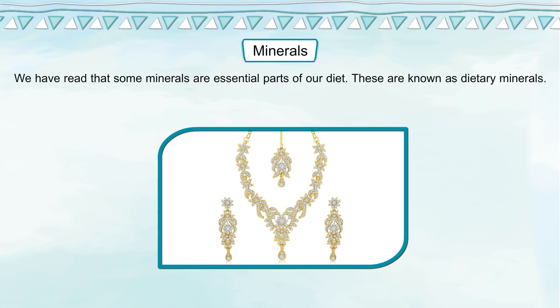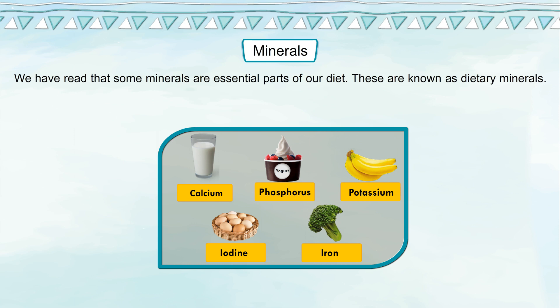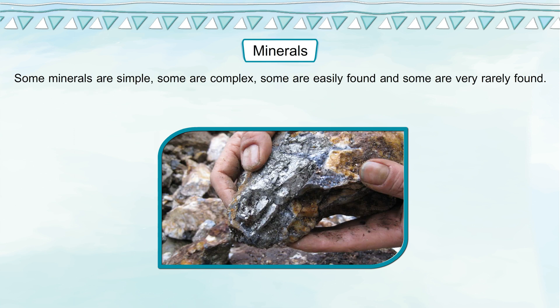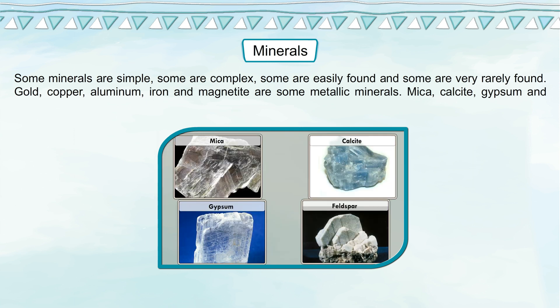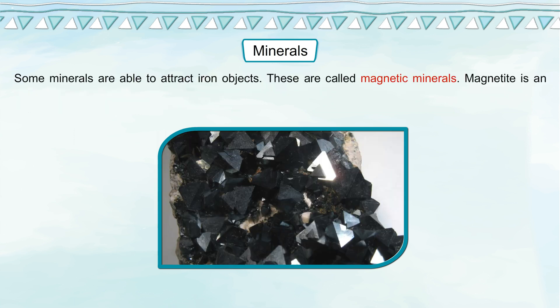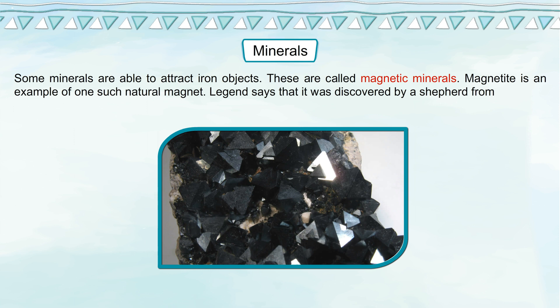Some minerals are essential parts of our diet and are known as dietary minerals. Calcium, phosphorus, potassium, iodine, and iron are some examples. Some minerals are simple, some are complex, and some are easily found while others are very rarely found. Gold, copper, aluminium, iron, and magnetite are some metallic minerals. Mica, calcite, gypsum, and feldspar are some non-metallic minerals. Some minerals are able to attract iron objects — these are called magnetic minerals. Magnetite is an example of one such natural magnet.